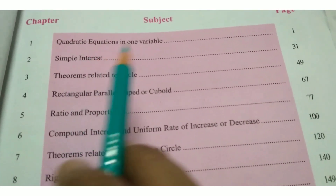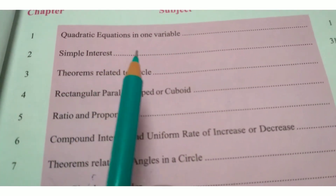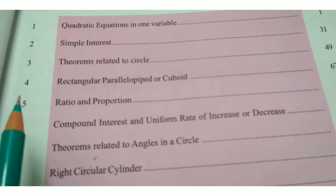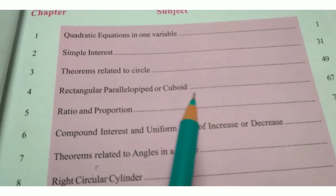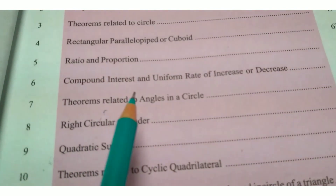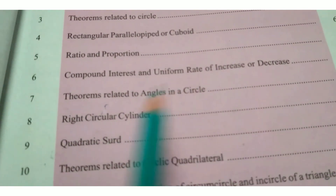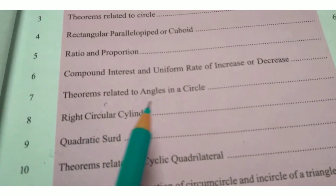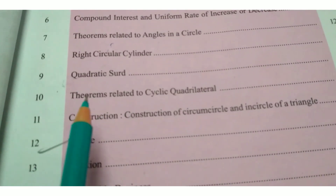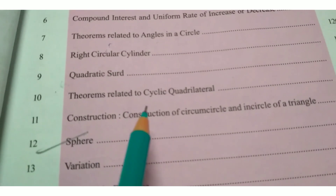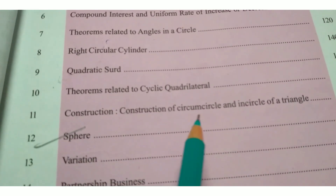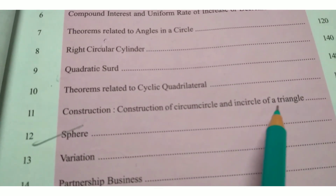First I discuss with you about your Syllabus. Chapter 1: Quadratic Equations in One Variable. Chapter 2: Simple Interest. Chapter 3: Theorems Related to Circle. Chapter 4: Rectangular Parallel Pivot or Cuboid. Chapter 5: Ratio and Proportion. Chapter 6: Compound Interest and Uniform Rate of Increase or Decrease. Chapter 7: Theorems Related to Angles in a Circle. Chapter 8: Right Circular Cylinder. Chapter 9: Quadratic Surd. Chapter 10: Theorems Related to Cyclic Quadrilateral. Chapter 11: Construction — Construction of Circumcircle and Incircle of a Triangle.